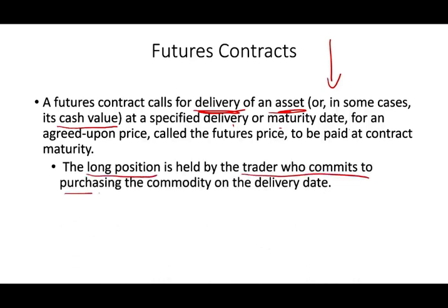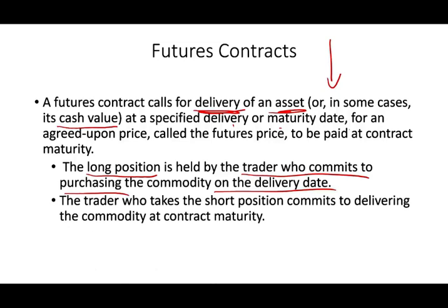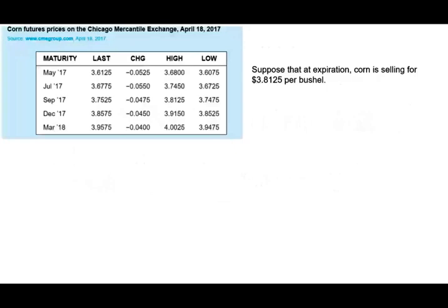The long position is held by the trader who commits to purchase — if you have a long position you must buy the oil on the delivery date. The short position commits to delivering — they will give you the oil. Let's look at an actual example: corn futures prices on the Chicago Mercantile Exchange on April 18, 2017. We have delivery dates in May, July, September, December, and March.